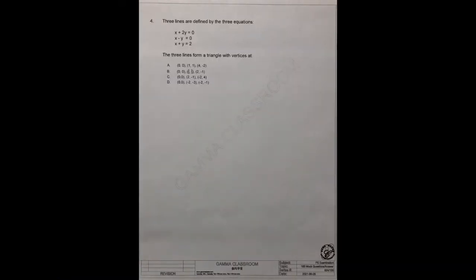Question number four. Three lines are defined by three equations: x plus 2y equals 0, x minus y equals 0, and x plus y equals 2. The three lines form a triangle with vertices at what number? They have four answers: A, B, C, D.